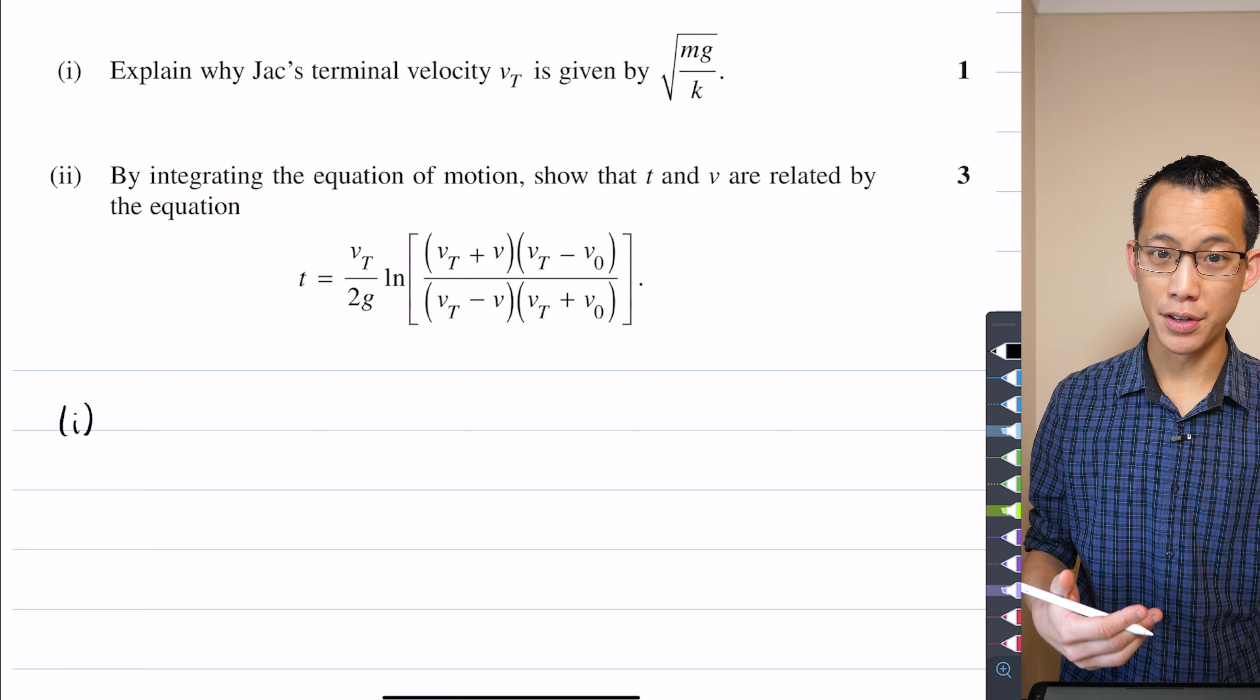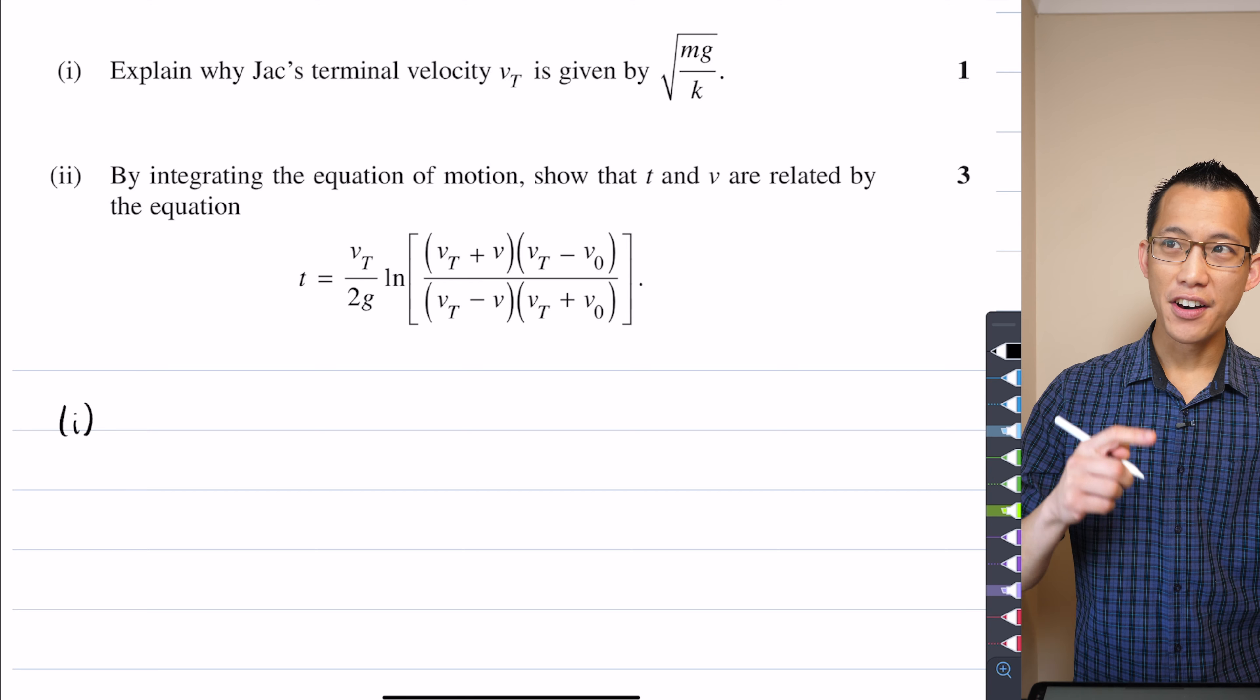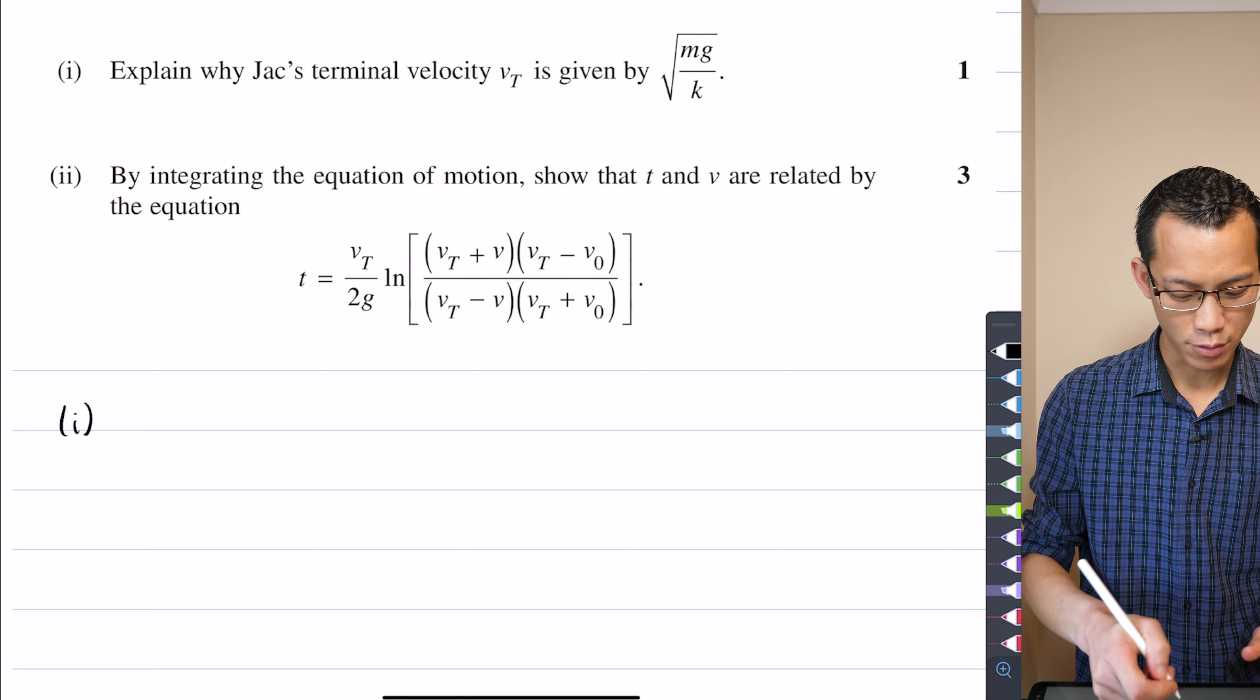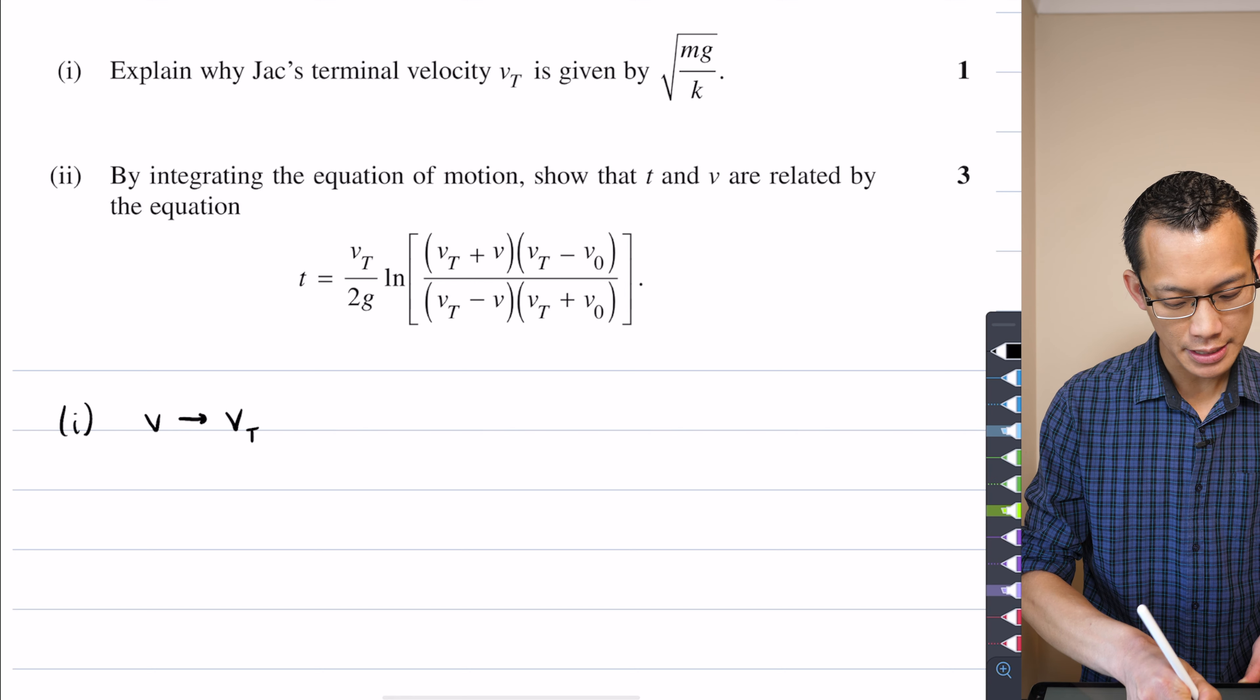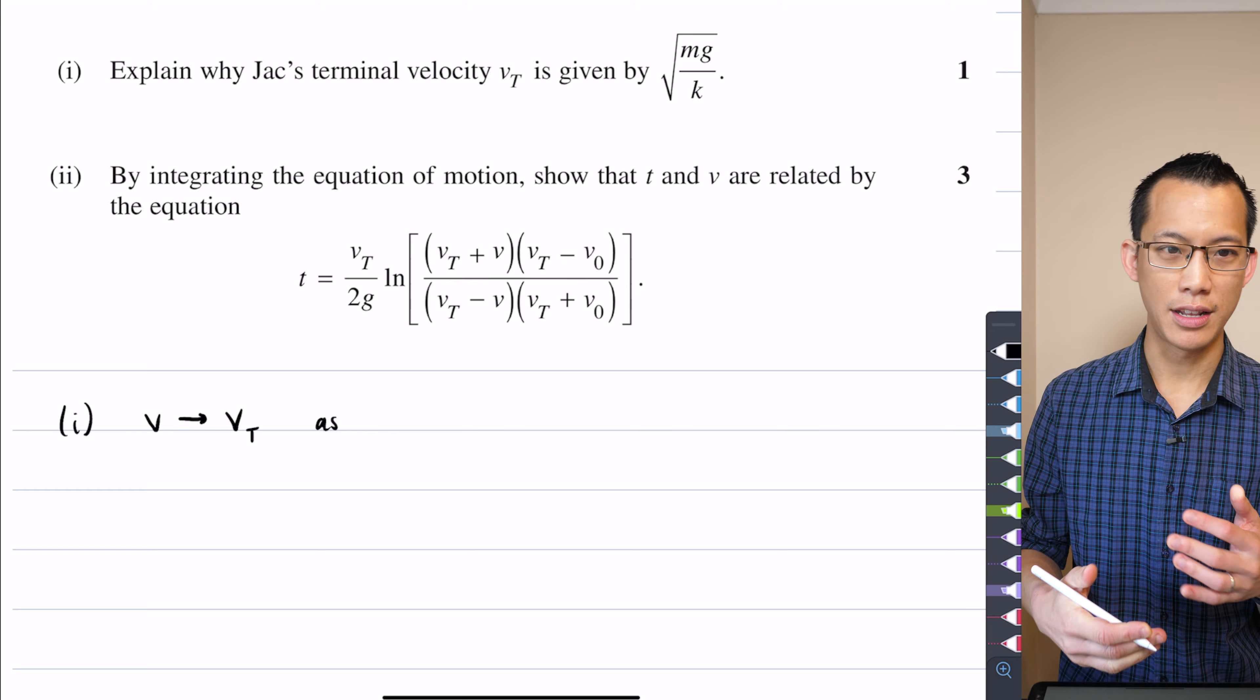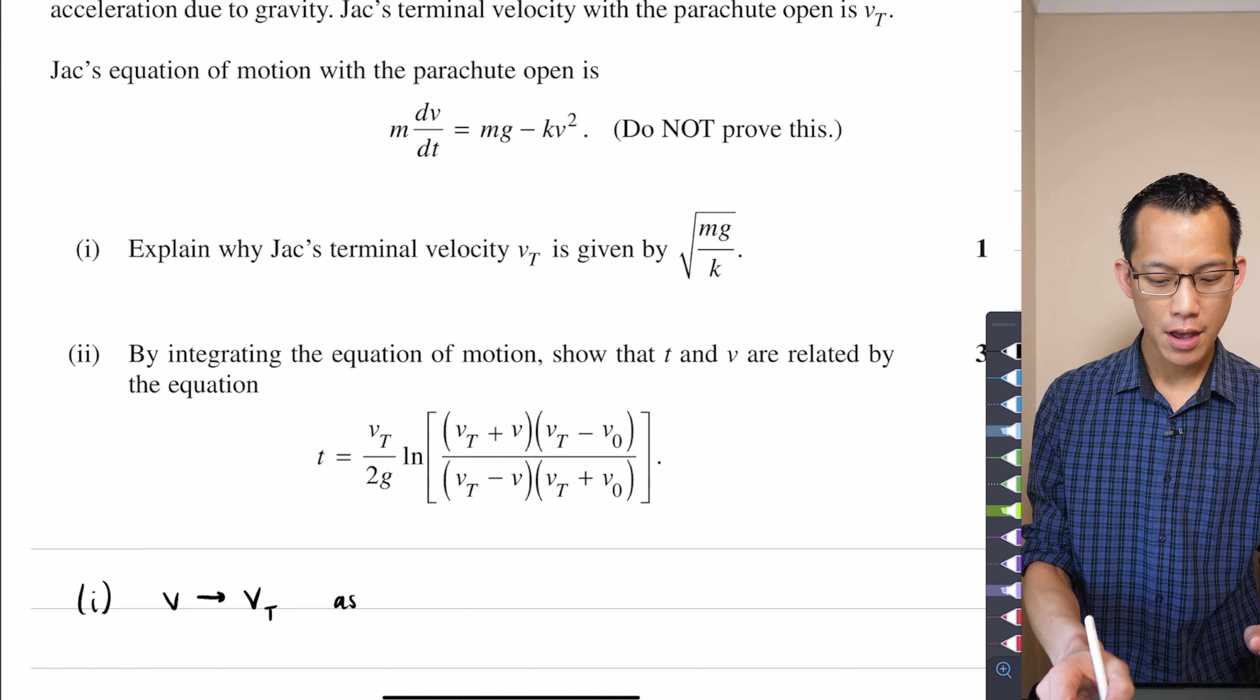We're trying to explain what terminal velocity is, right? And use as little effort as I can. So the whole idea is that your velocity approaches terminal velocity. So I would say that V approaches VT under what condition? Like what is the most useful way to say it?